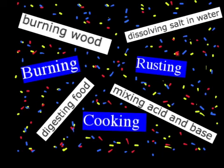Rusting: when iron comes in contact with oxygen, you're going to get rust instead of the iron that you started with — that's new matter. Mixing an acid and a base to get something neutral, that's going to be a chemical reaction — new matter, once again a chemical change.